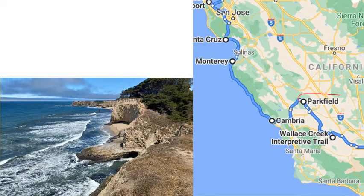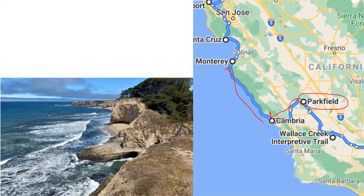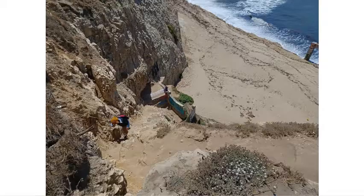Then I drove from the earthquake town of Parkfield to the coast of California and drove this highway right along the ocean. The beach in California does not look like the beach in Florida. They have a lot more rock and a lot less sand than what you see in Florida, the Caribbean, or anywhere around the Gulf of Mexico. It's actually a challenge to get to the beach sometimes.